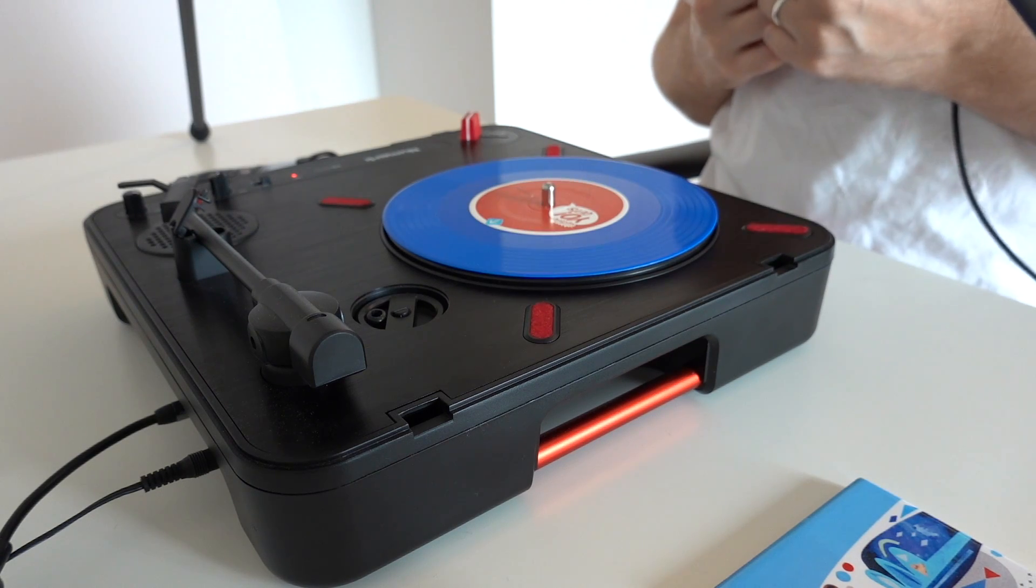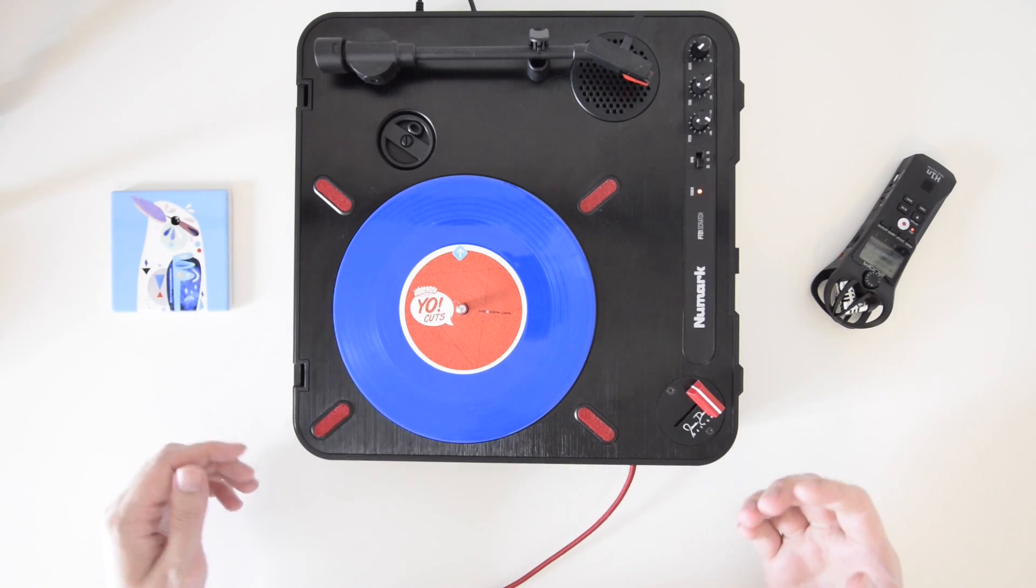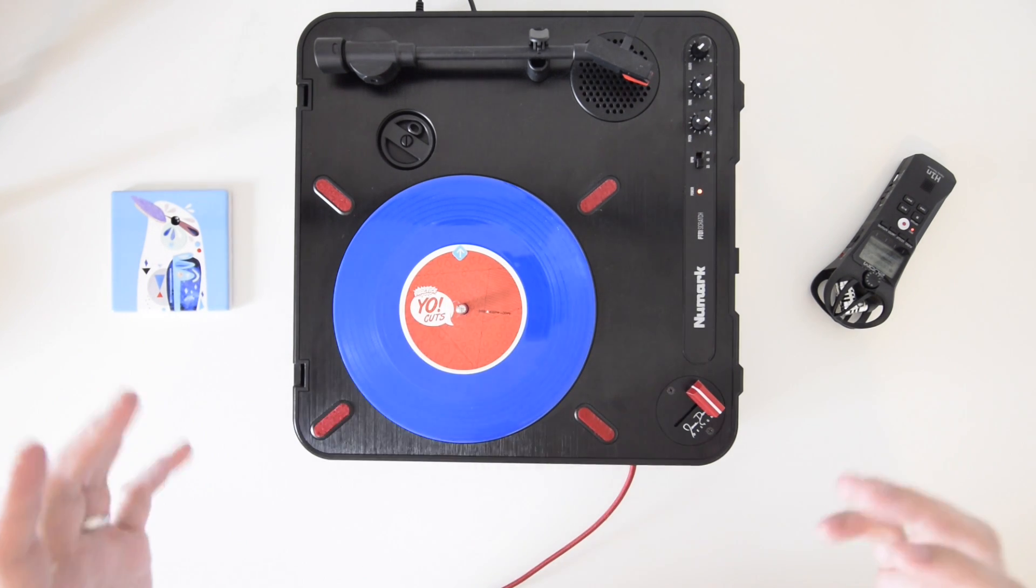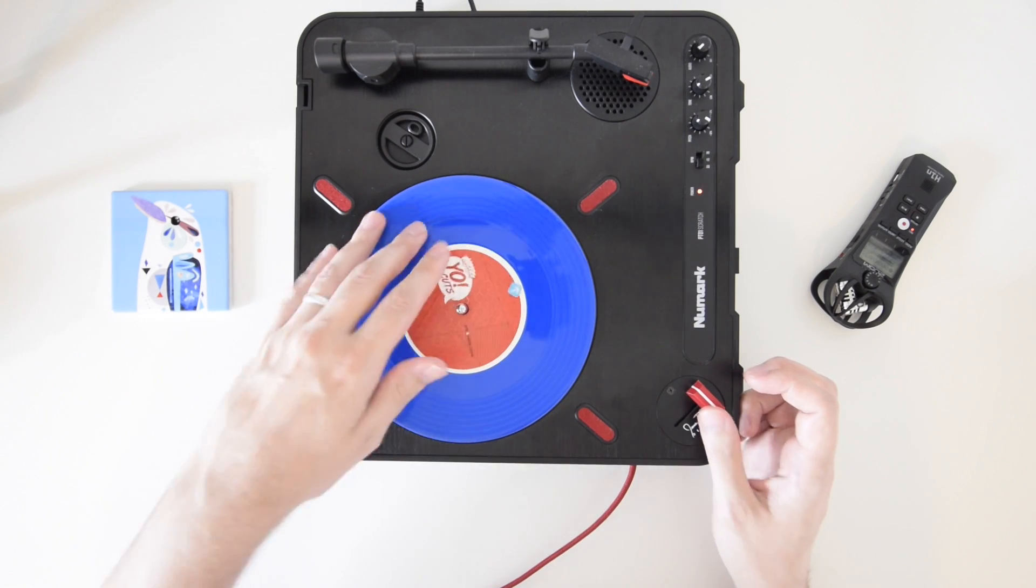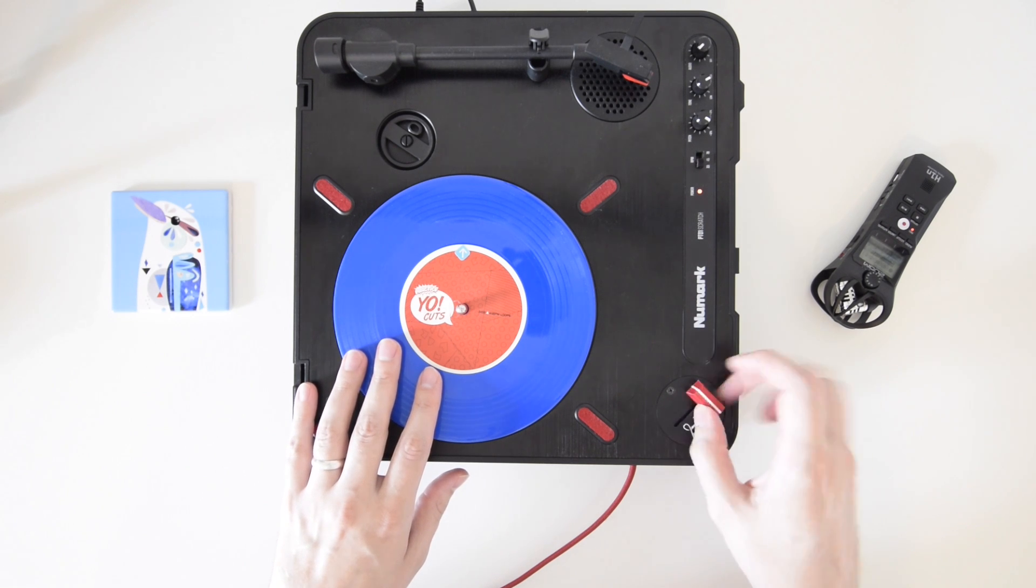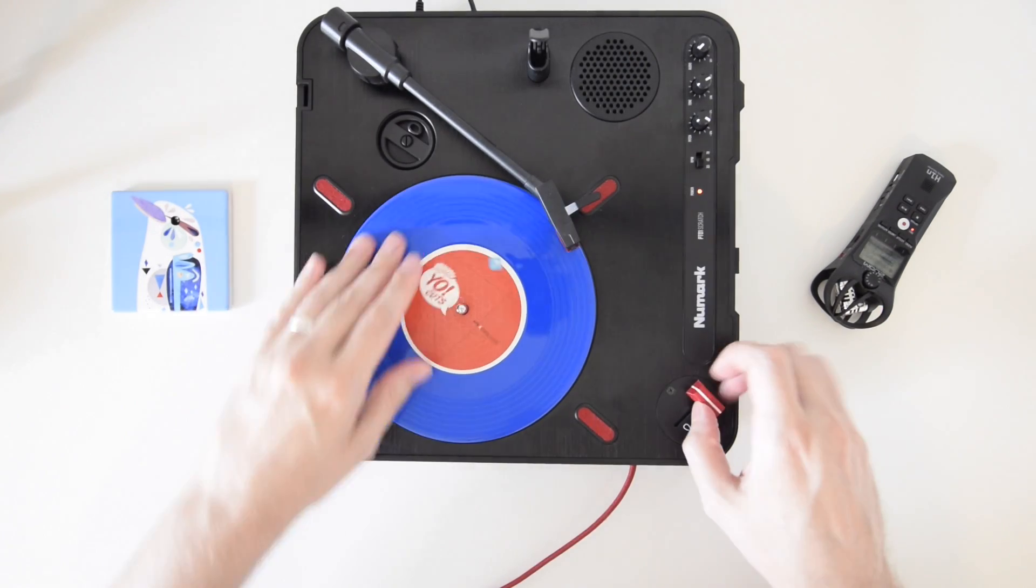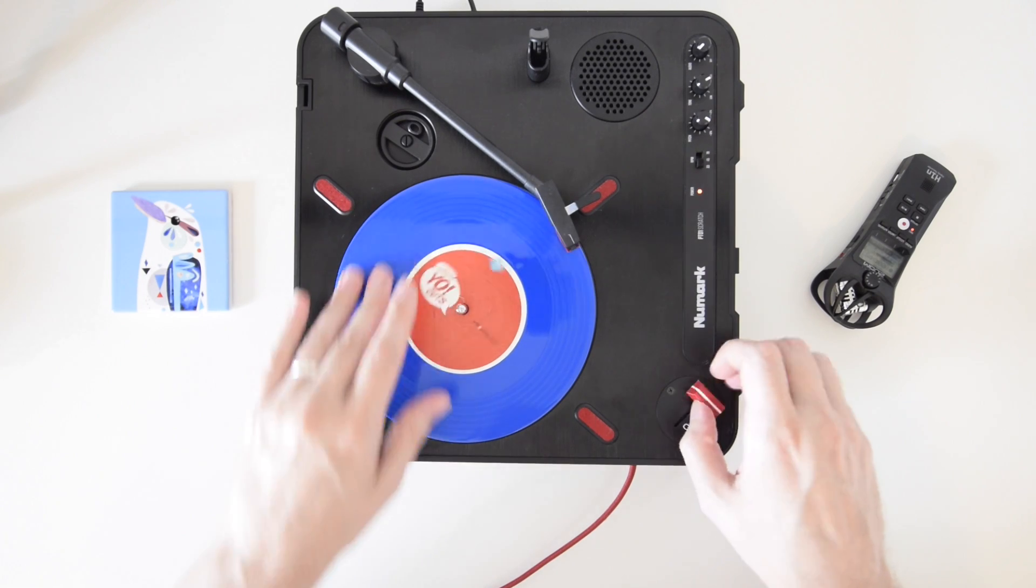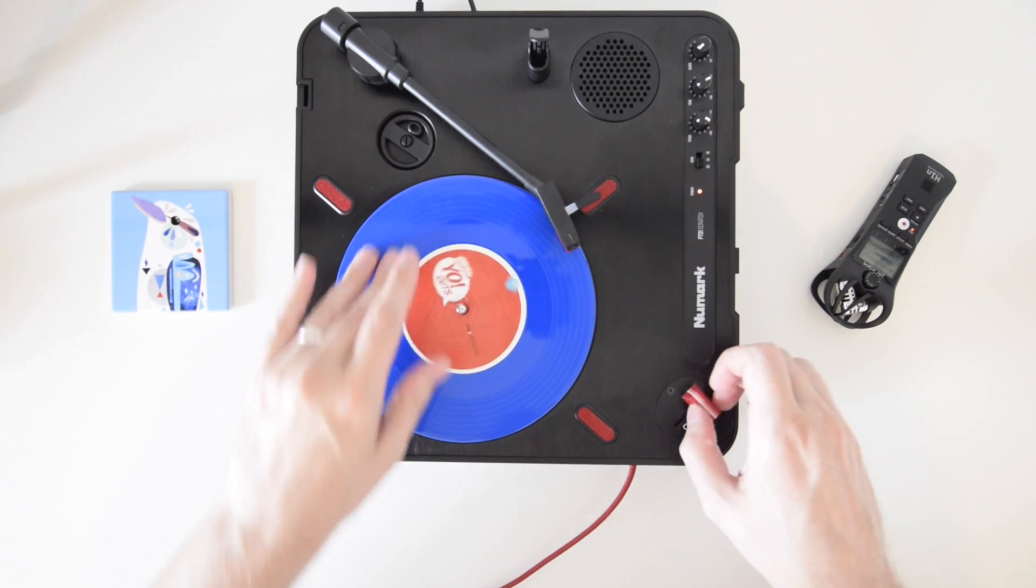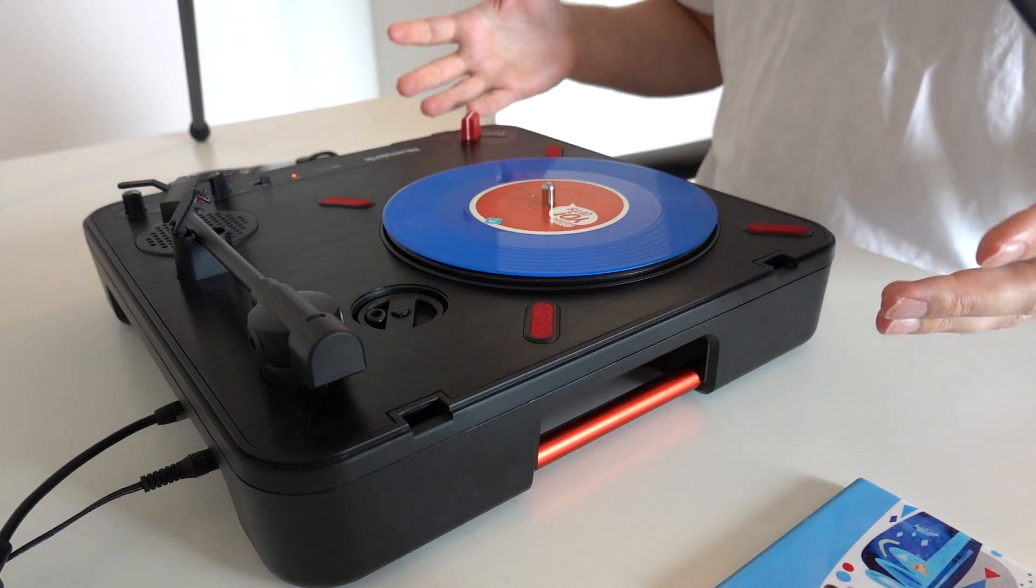Now the last technique I'm going to teach you is a scratch called the transformer. Now in terms of scratch history, this is one of the cuts that kind of changed the game. Also, it's kind of one of the simplest ways of making you sound like you really know what you're doing. Now the technique is something like this. Moving the record back and forth, just like a baby scratch, you're going to open and close the crossfader in time with the music.